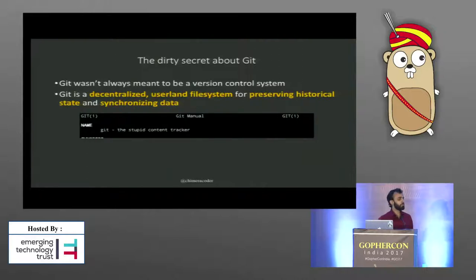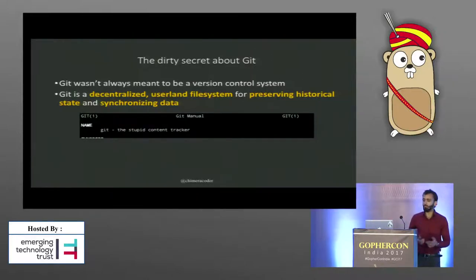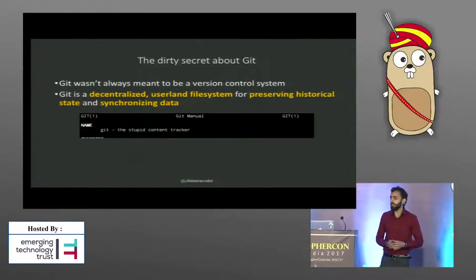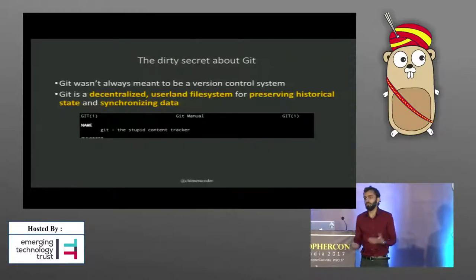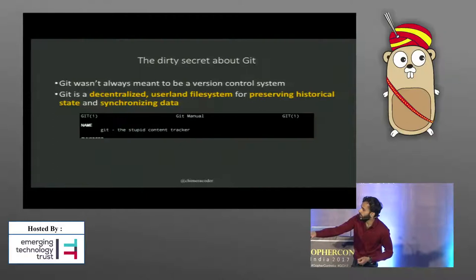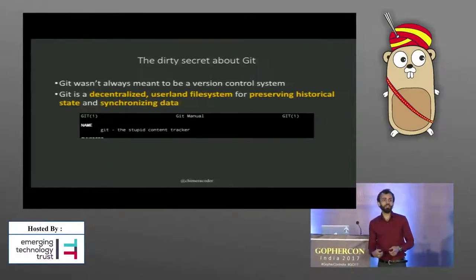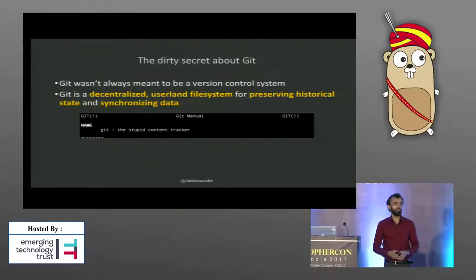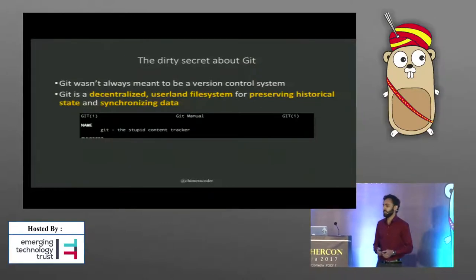Git wasn't actually originally intended as a version control system. It was originally intended to be a file system for people to build a version control system on top of. And then it turned out that Git itself made a pretty good version control system, so they kept it. It's right there in the man page: Git is the stupid content tracker — not the stupid software tracker or source control tracker.